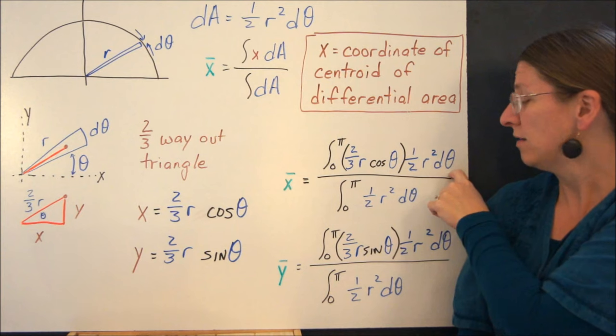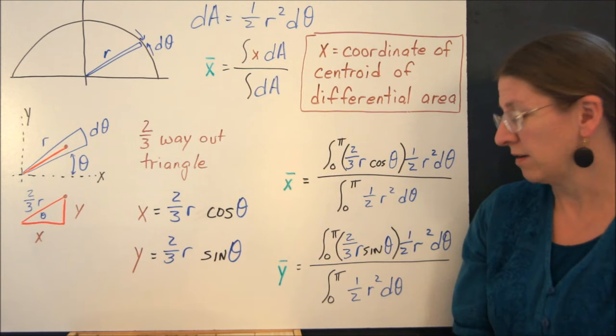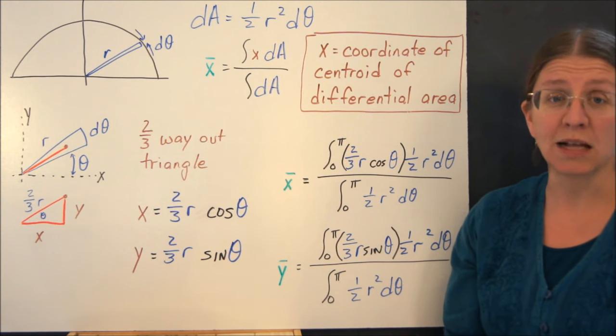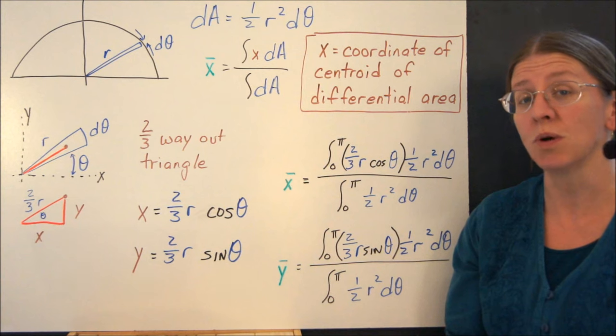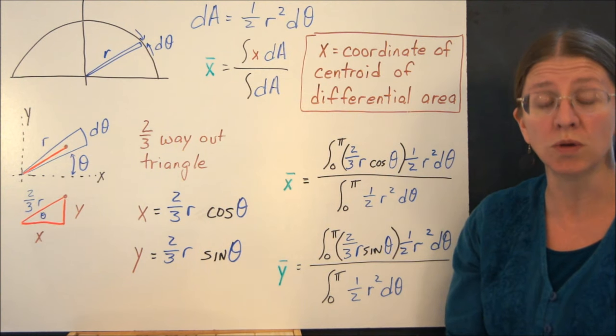And you have cosine theta d theta or sine theta d theta, which are not exactly very complicated integrals compared to the square roots we would have had if we didn't change the coordinate system.